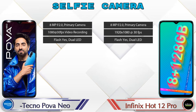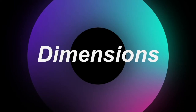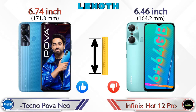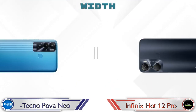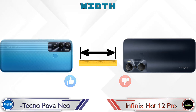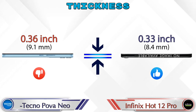Now let's check the details about dimensions. Length: Power Neo is 6.74 inches and Hot 12 Pro is 6.46 inches, which is less than the Power Neo. Width: Power Neo is 3.04 inches and Hot 12 Pro is 2.98 inches, also less than the Power Neo. Thickness: Power Neo is 0.36 inches and Hot 12 Pro is 0.33 inches.